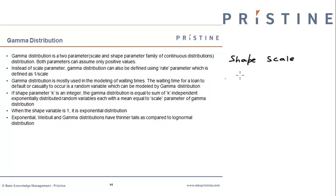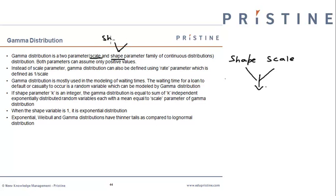In the current session, we will have a look at gamma distribution, which is again from the same family of distribution, having two parameters. As we have seen, the scale parameter decides the dispersion of the distribution and the shape parameter decides the shape of the distribution and impacts the skewness and kurtosis.